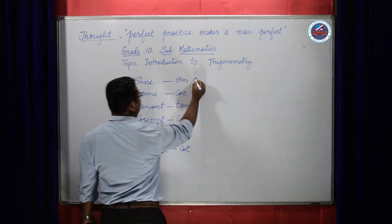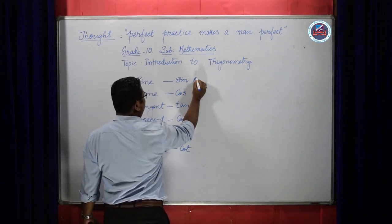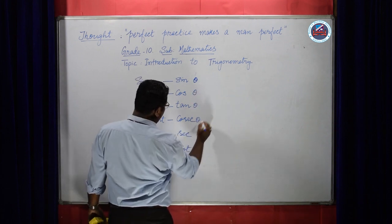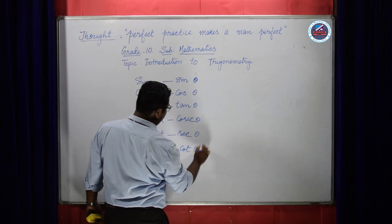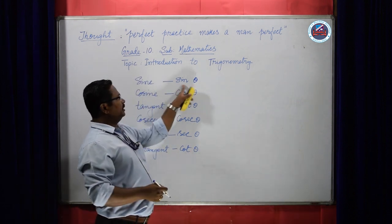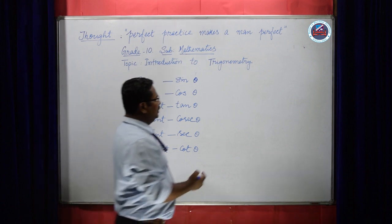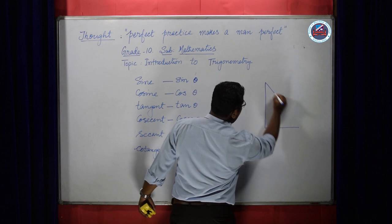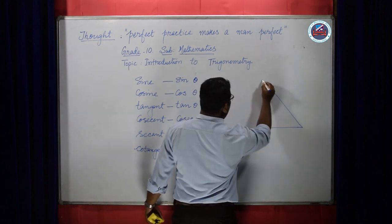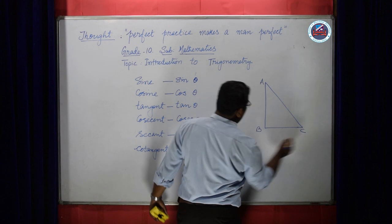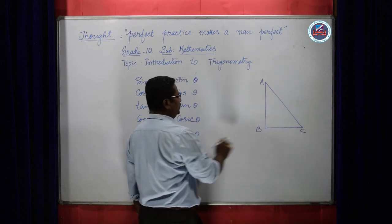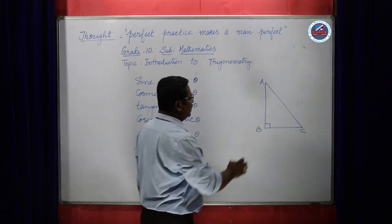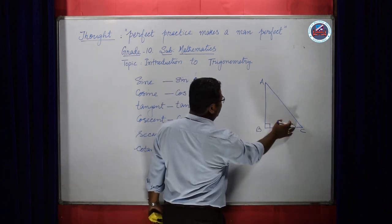Suppose I take this angle as theta — this letter we call it as theta. If I take this as theta, then they can be defined distinctly. So let us first define what is sine theta. Sine theta is defined in a right angle triangle — one of the measurements of the angle is 90 degrees. Here I have taken angle B as 90 degrees.